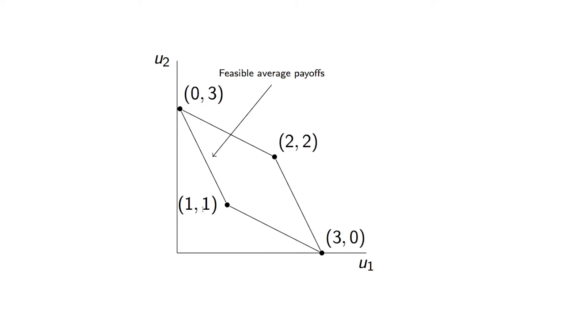And so here are our utilities for the stage game. And what we've drawn here are the feasible average payoffs. So with our discounting factor delta, our average payoffs will live in this polytope here.